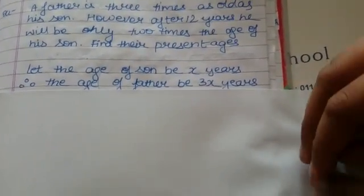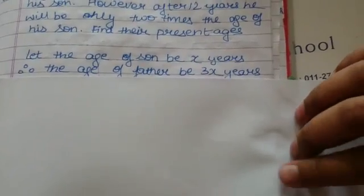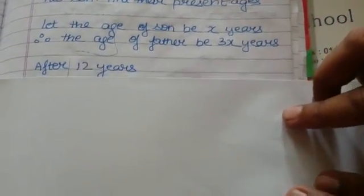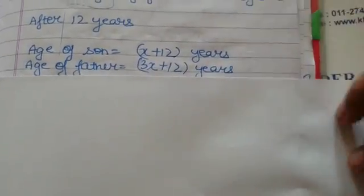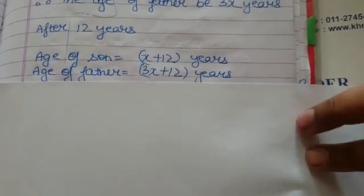After 12 years, remember to mention years when you are taking ages. Okay? After 12 years, the age of son will be X plus 12 years. Age of father will be 3X plus 12 years.